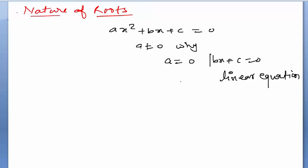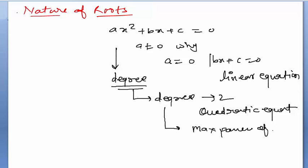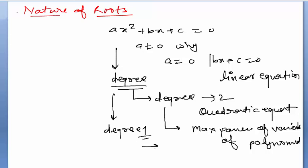To understand whether an equation is quadratic or linear, the basic concept is the degree. If any equation has degree 2, we say it is called a quadratic equation. Degree is the maximum power of the variable in a polynomial. If the degree is 1, we say the equation is a linear equation.